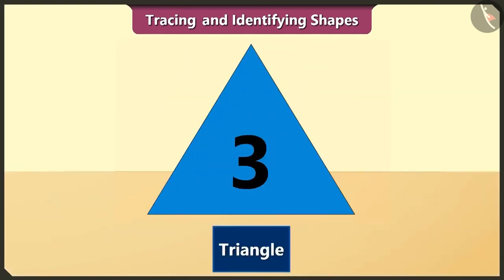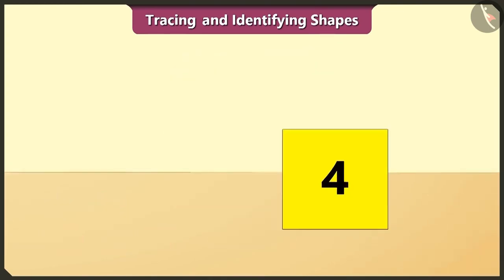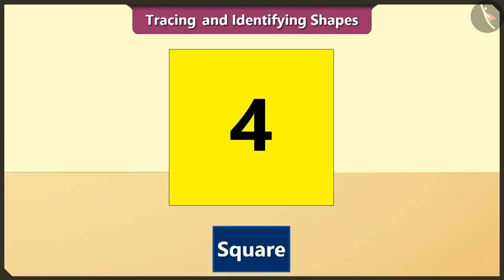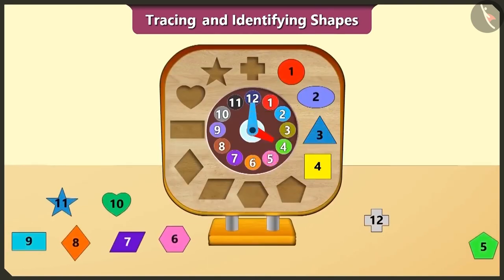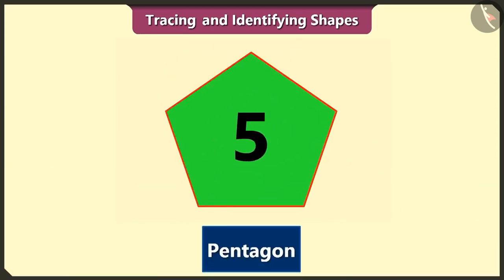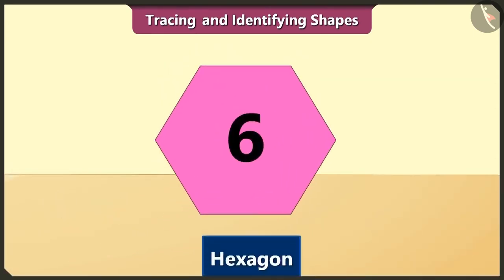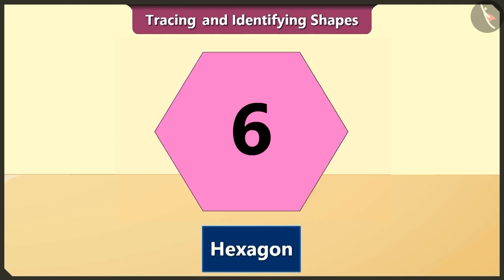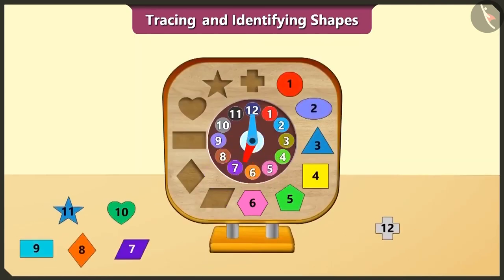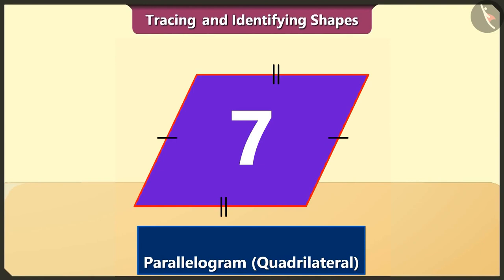The triangle is third in order. A triangle has three sides. The square is fourth in order — the length of all its four sides are the same. The five-sided pentagon is fifth in order. The six-sided hexagon is sixth in order. The four-sided quadrilateral is seventh in order.